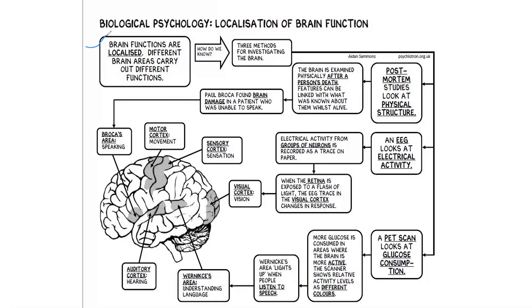The brain functions are localized — different brain areas carry out different functions. We know this through three methods for investigating the brain. The first is post-mortem, which looks at physical structure. The second is EEG, which looks at electrical activity. The third is the fMRI or PET scan, which looks at glucose consumption.